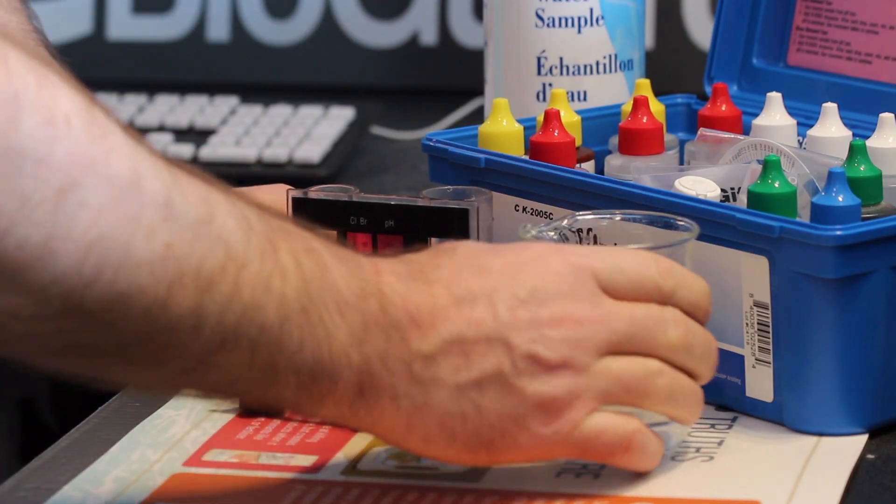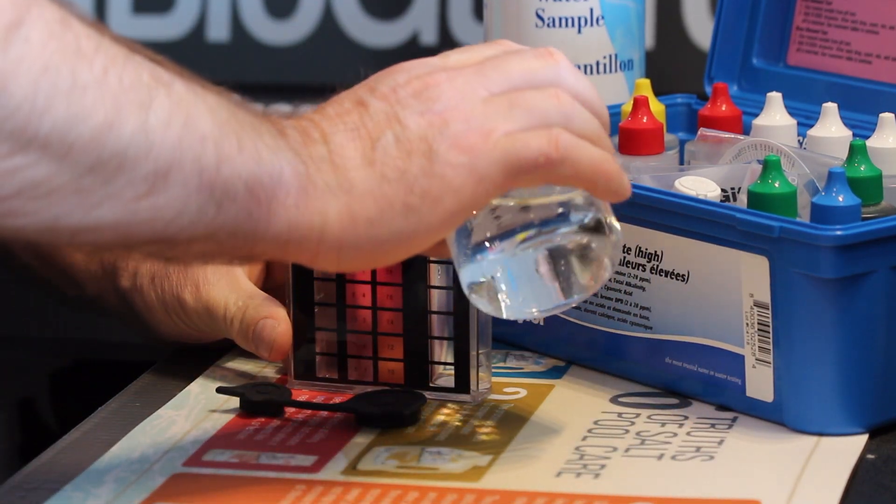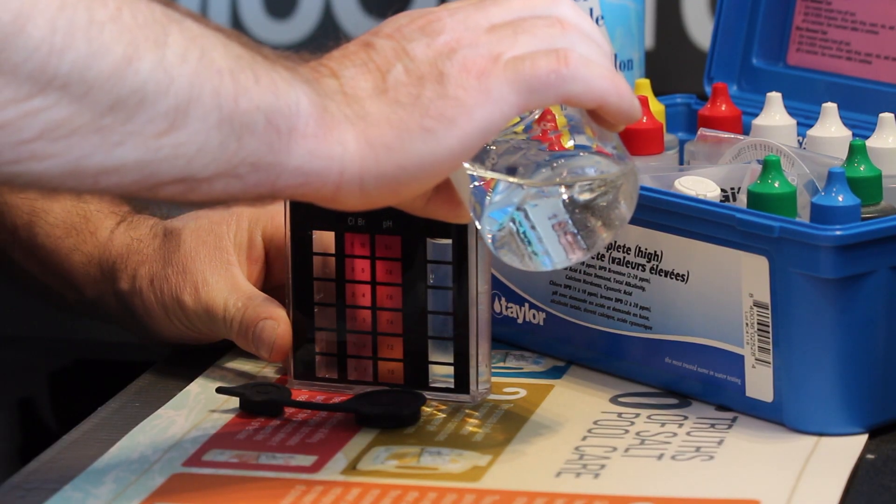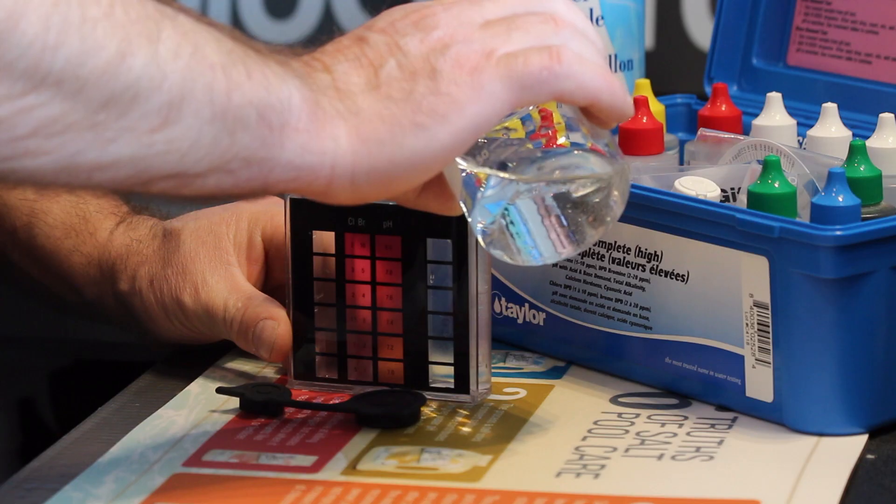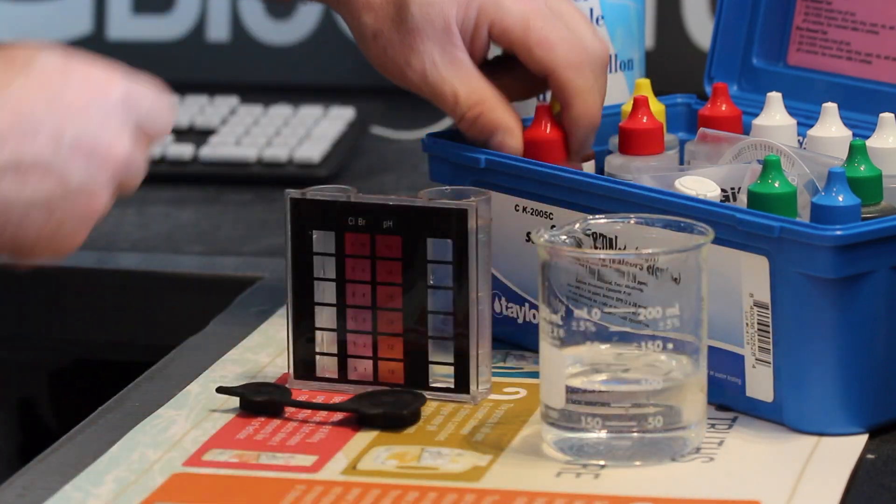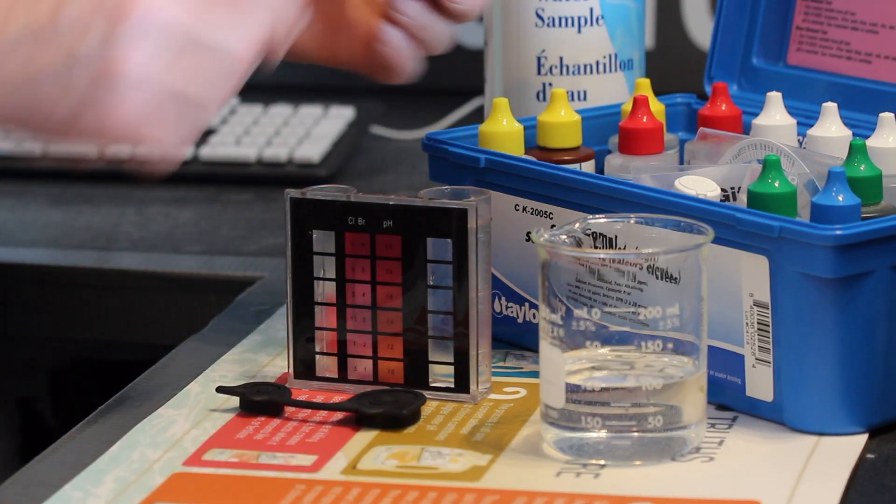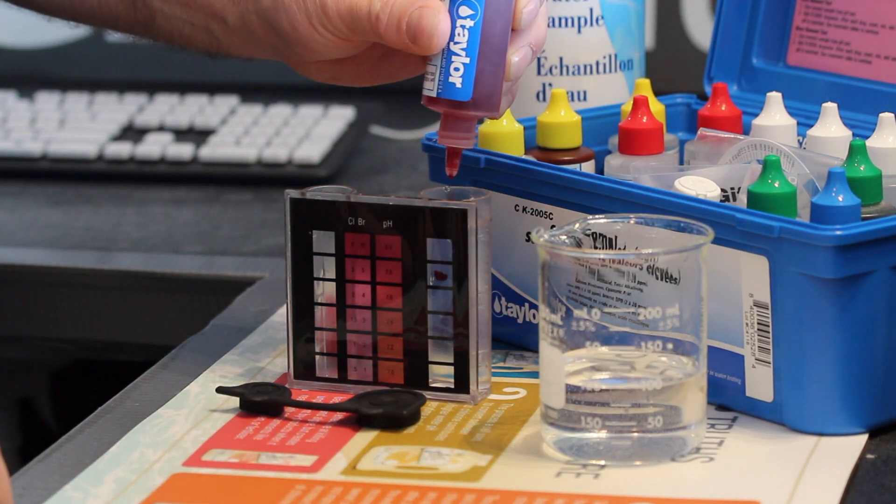To test the pH of your pool water, rinse then fill the large comparator tube to the 44 milliliter mark. Add 5 drops of reagent number 4.